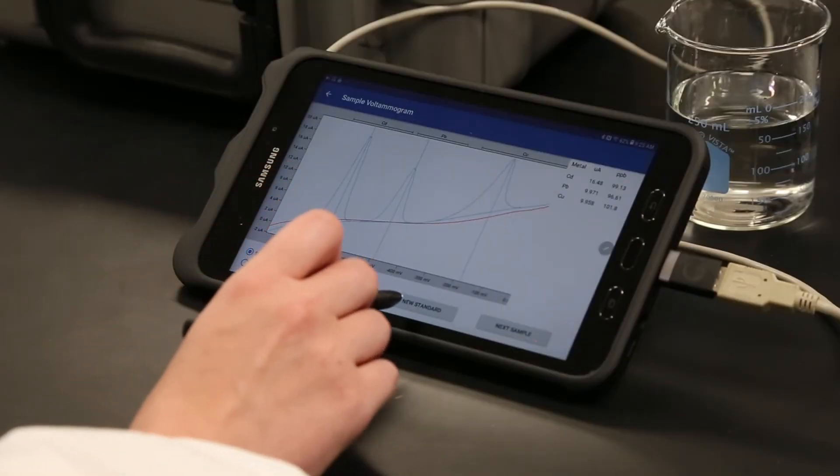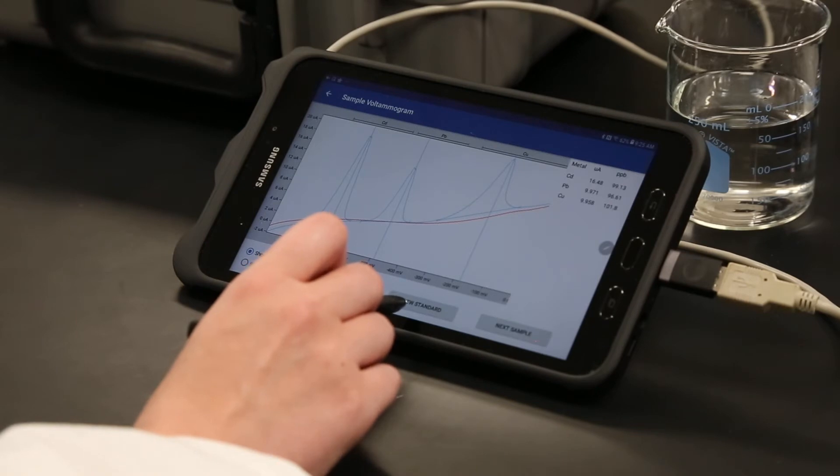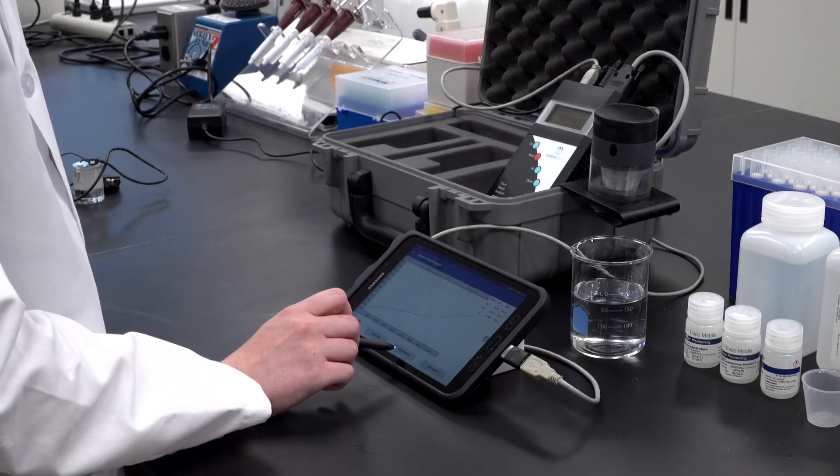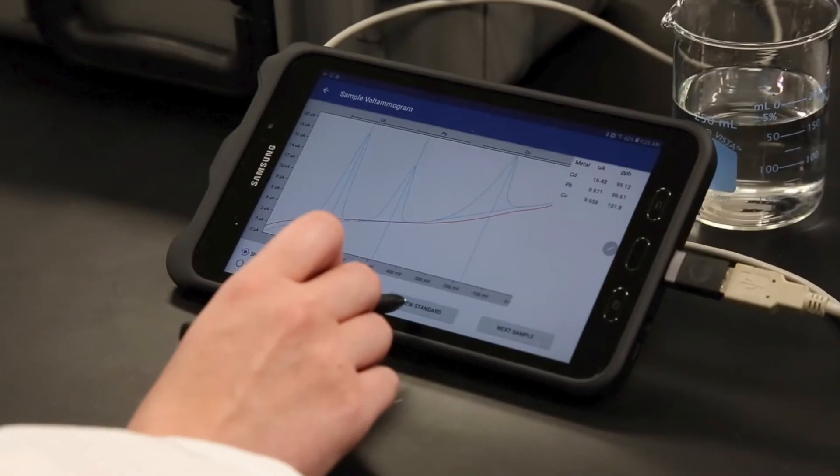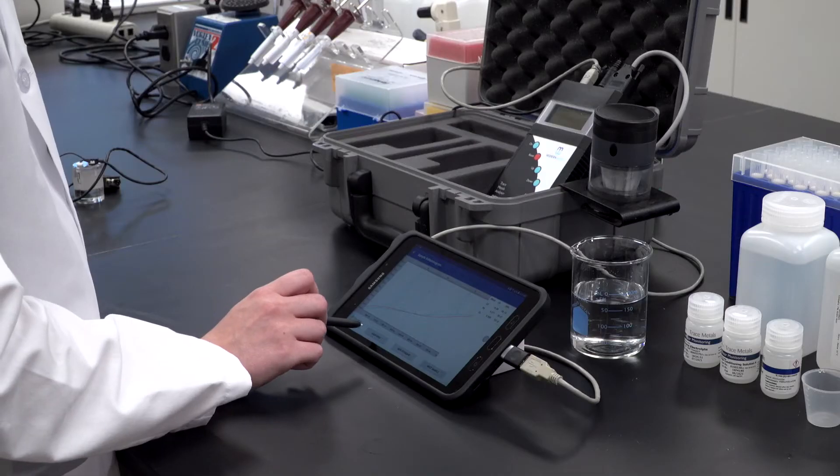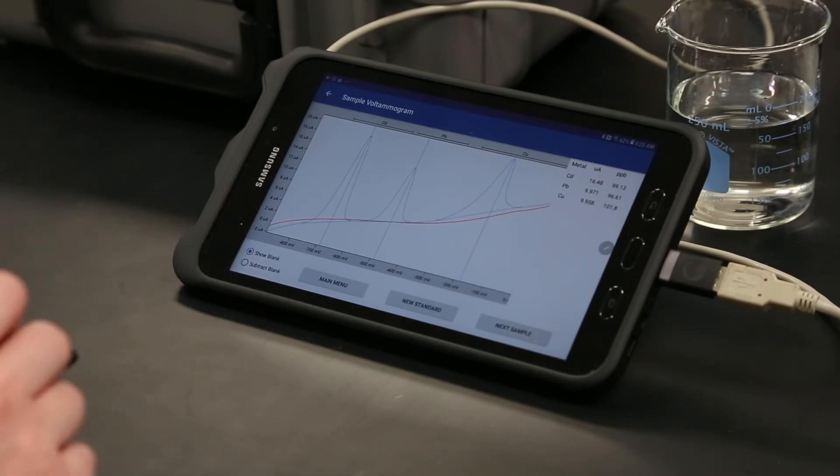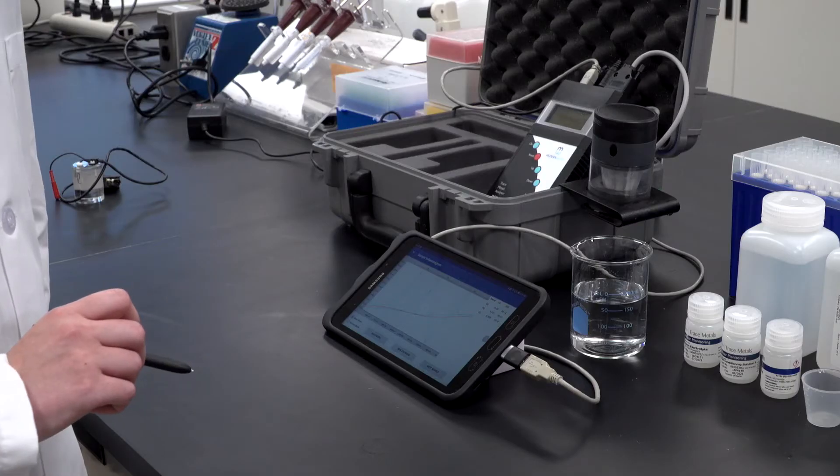Recalibrate for the same analyte metal and concentration range using the New Standard button. It's typically recommended to recalibrate after five samples or if the required concentration range changes. Click the Main Menu button to return to the main page to analyze other analyte metals, change option settings, or use any other functions.